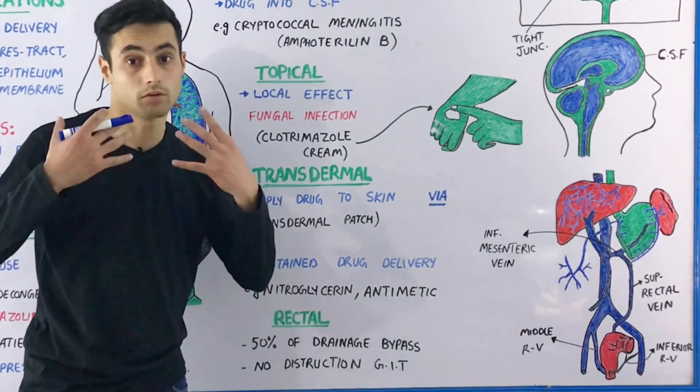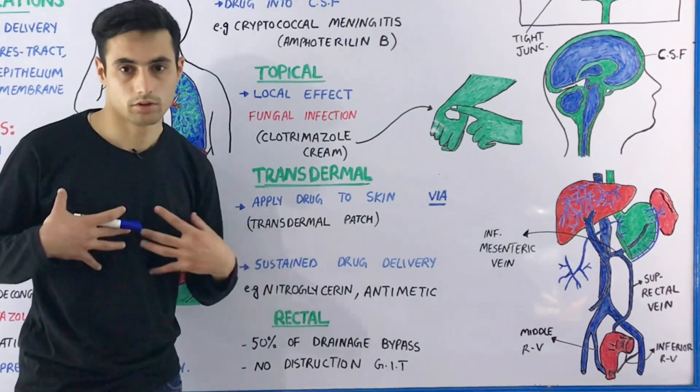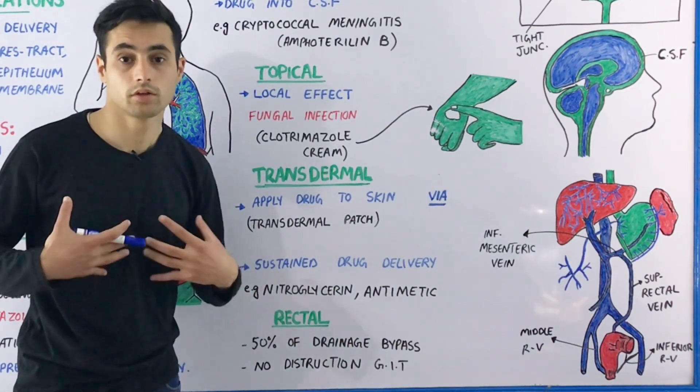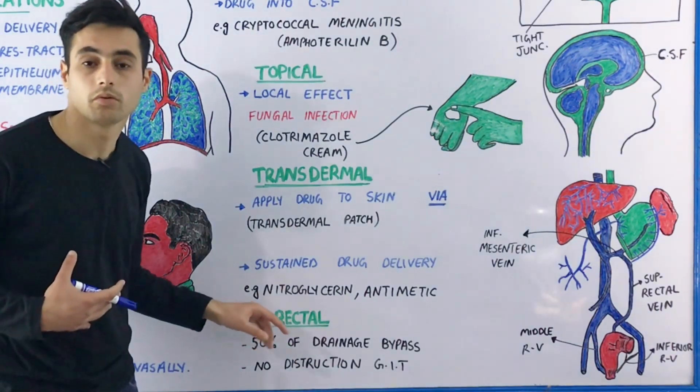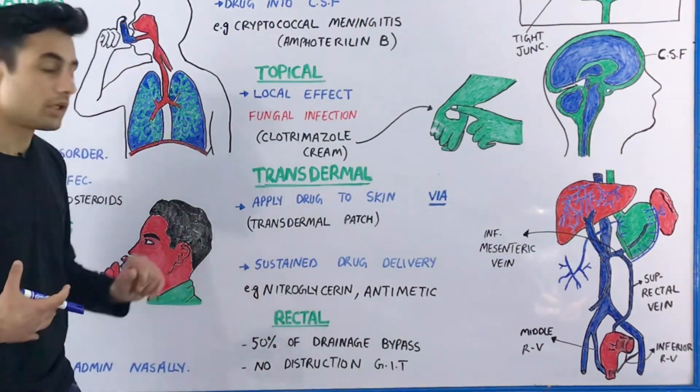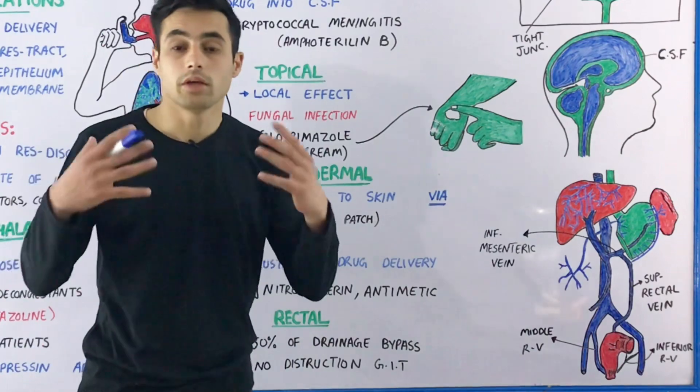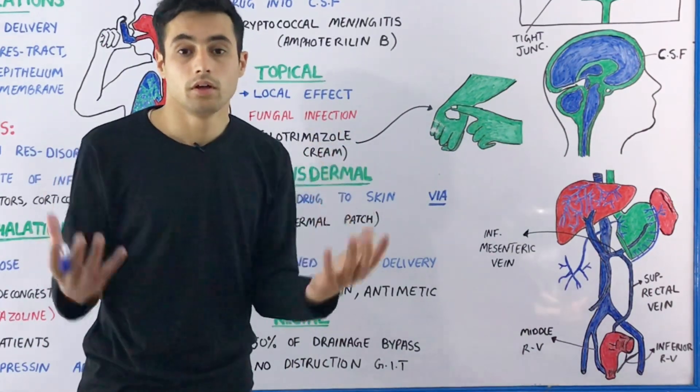Sometimes the patient is unconscious and you cannot give them the drug orally because it may go into their lungs and cause blockage. We administer the drug through the rectal route because the blood supply of the rectum is very profuse, so it is absorbed very quickly.